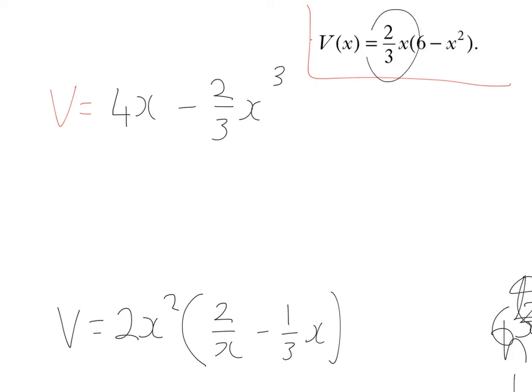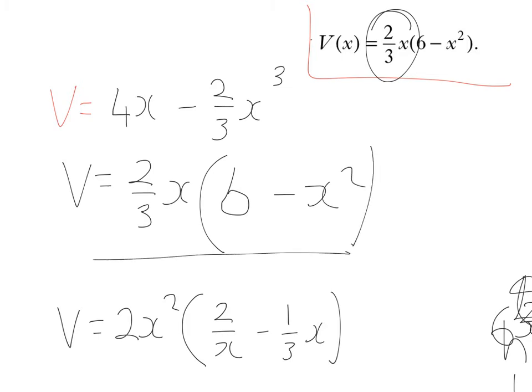Now the question is looking for me to take out a common factor of 2/3 x. So I'm going to take that out. 2/3 x times what gives me 4? Well, 2/3 times 6 would be 12/3, so that's 4. So that would be 6. 2/3 x times 6 is 12/3 x, which is 4x. 2/3 x times x² gives me minus x². And that's part A.